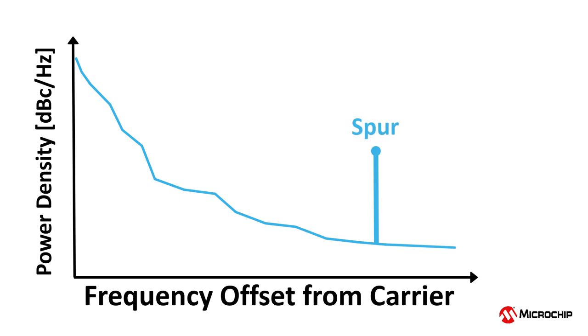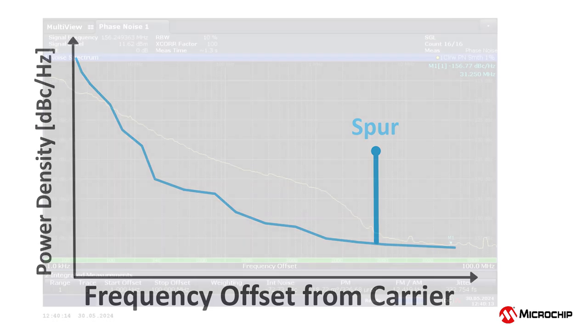Spurs are often the result of interference from nearby RF clock sources, which may be a wire carrying a clock nearby, or even RF signals generated by electrical equipment.